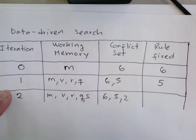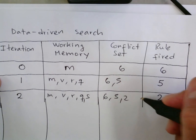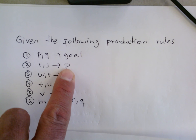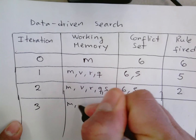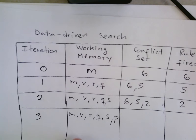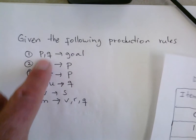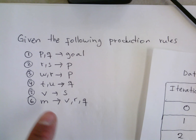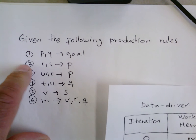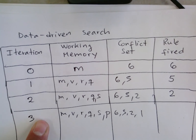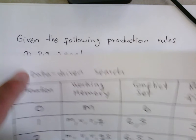The next rule to fire is rule two. Looking at rule two in the production system, firing it means we will include P in working memory. We now have P added, and nothing has been deleted. Then we look at which of these facts matches the production rules. The only rule that has P is rule one, which requires both P and Q — and we have both — so rule one is added. The matches are six, five, two, and one.